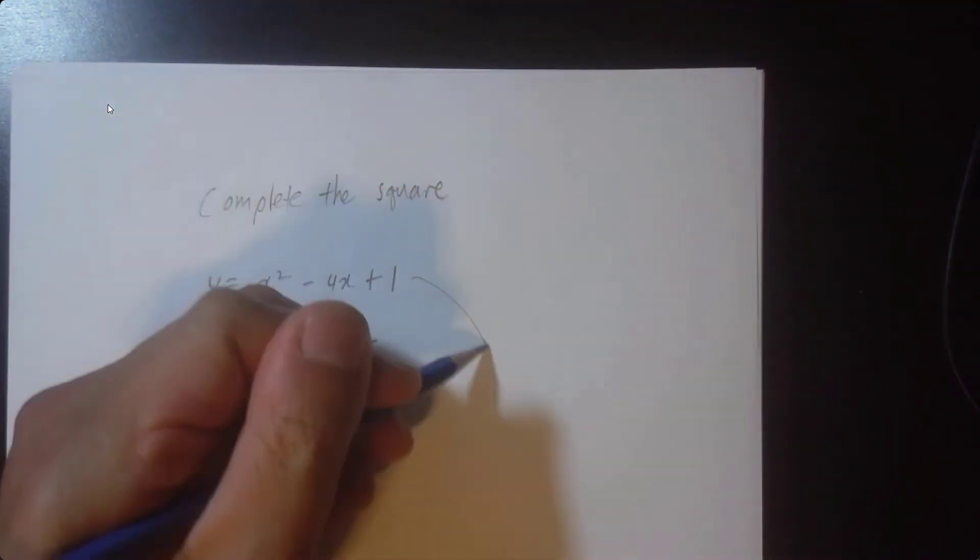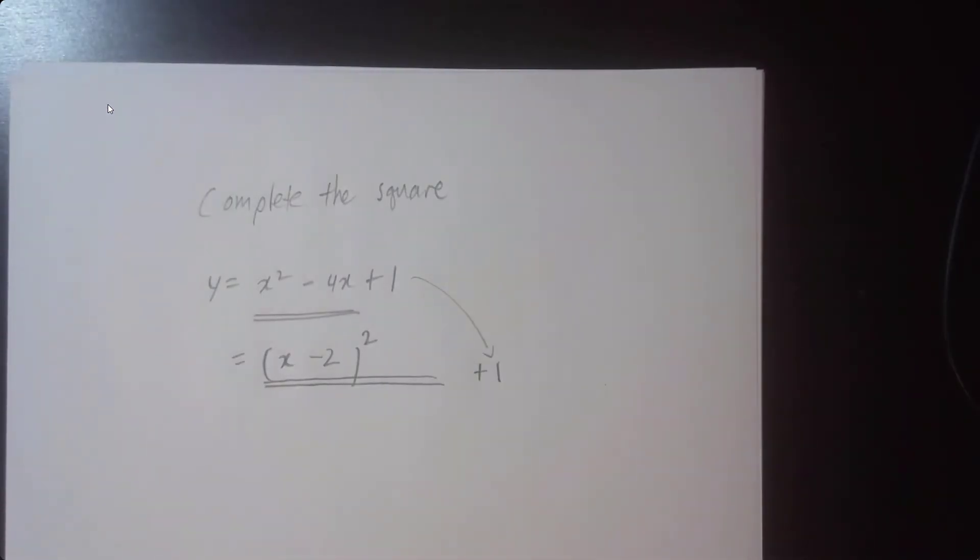This positive 1, whatever the number is, we're just going to copy it and ignore it for now. So we promise that this underlying part is equivalent to this underlying part and we're almost right. If you want to foil or expand this out, you'll realize that you're very close but you're always going to be off by a bit. So how do you fix it?